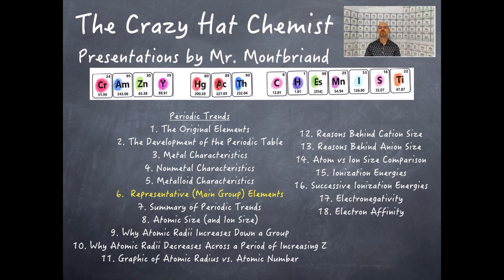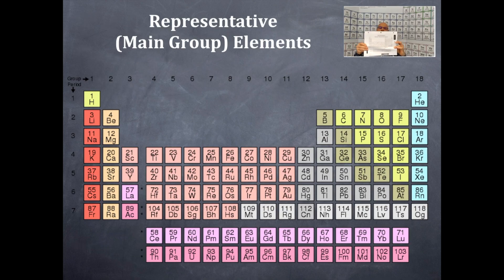What we're going to do is fold the periodic table and you'll see that these are the representative or the main group elements. So right here I have a periodic table. Hopefully you can see that one.